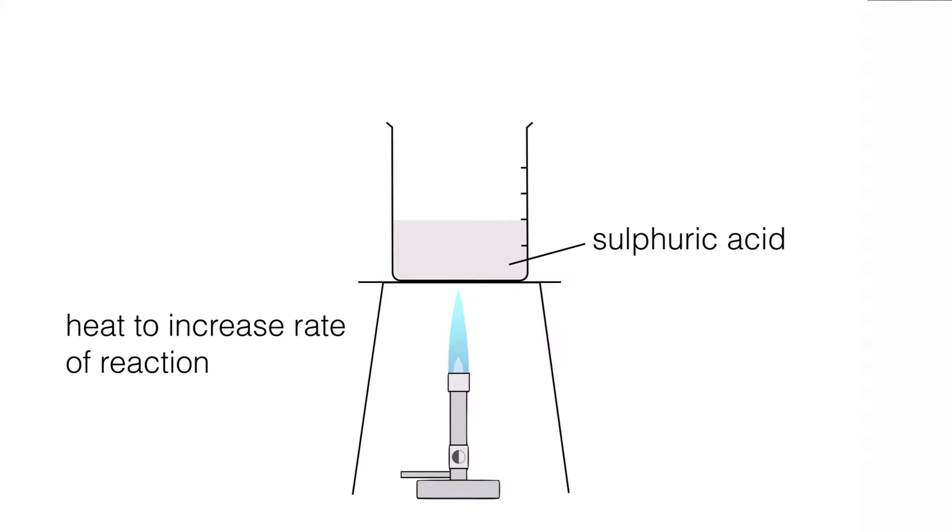First thing we do is we have, in this case, our sulfuric acid in a beaker and what we're doing is we're heating the sulfuric acid to increase the rate of reaction. We have to heat it gently and make sure it doesn't boil.